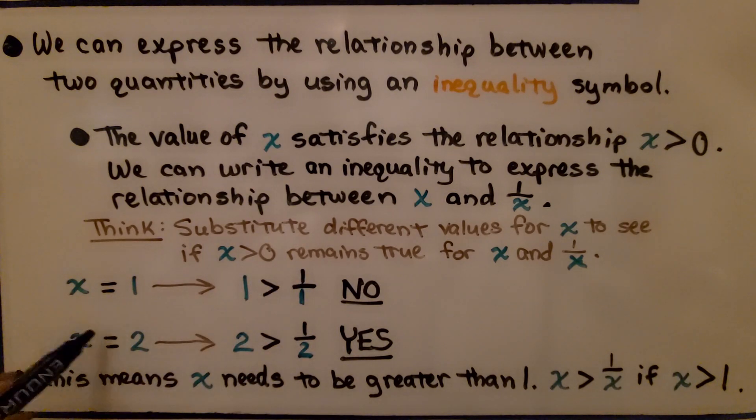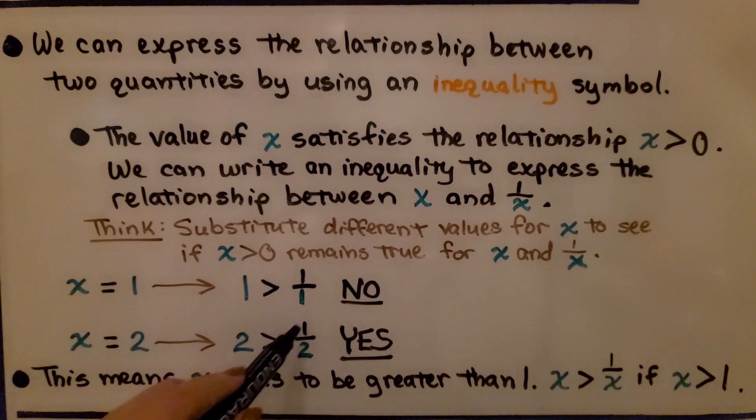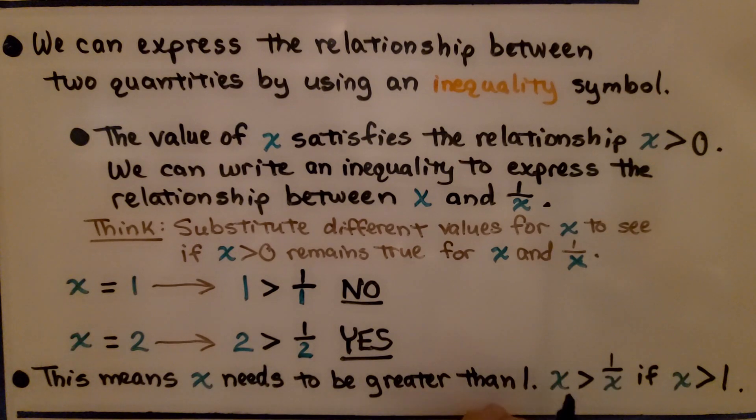If we say x is equal to 2, then we could say 2 is greater than 1 over 2. Yes, that makes sense. That is true. So this means that x needs to be greater than 1. We could write x is greater than 1 over x if x is greater than 1. That makes sense.